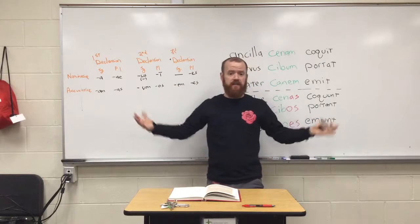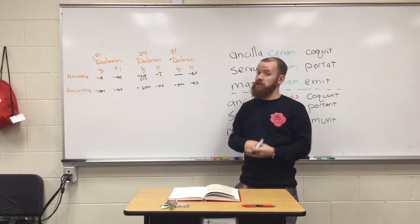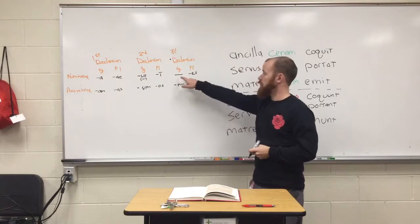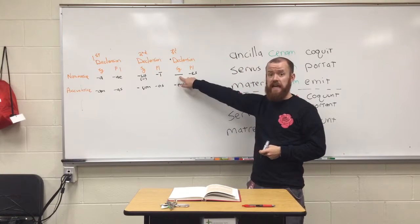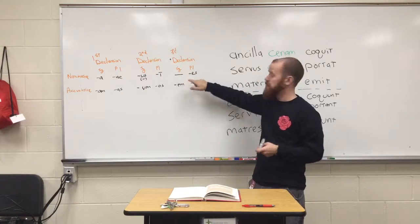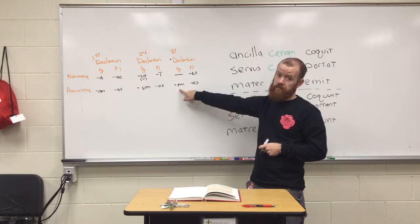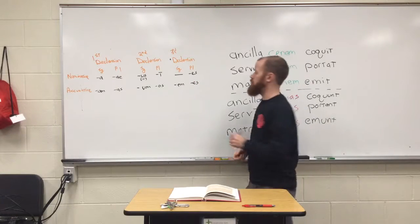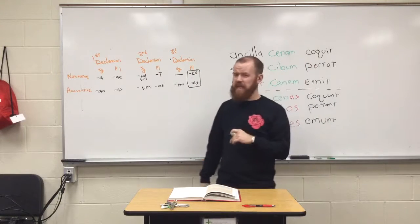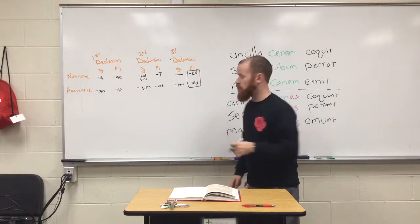Third declension singular nominatives have a variety of endings — it could end in '-o' like 'Romio' or 'leo,' in '-s' like 'canis,' or in '-r' like 'mater' or 'pater.' That's why we use a dash for the singular nominative. But everything becomes standard for the rest: '-es' for plural nominative subject; '-em' for singular accusative direct object; '-es' for plural accusative direct object. Be careful — the plural nominative and plural accusative look the same in the third declension.